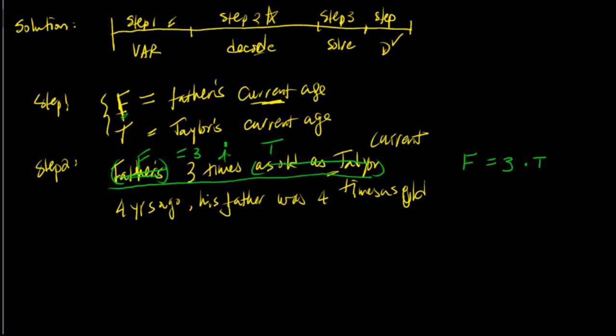So let's go back in there now, let's drag the equation out of this one. Four years ago, how old was his father four years ago? Well, since we clearly defined that Taylor's father current age is F, so four years ago, his father is F minus four. So four years ago, he's this old.